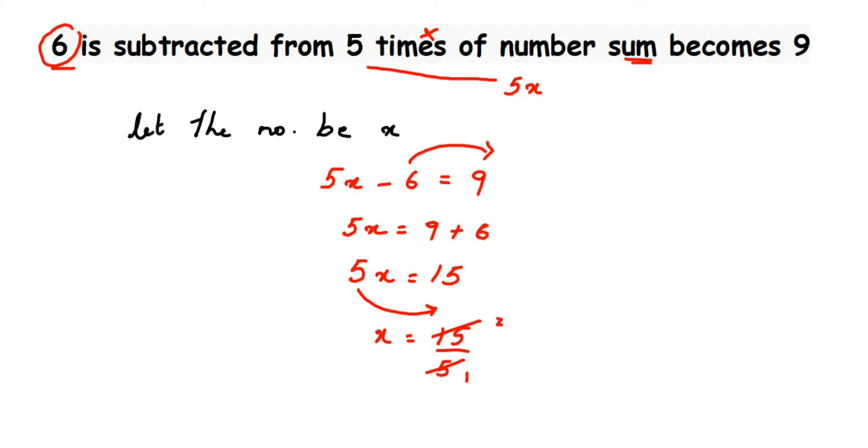Cancel the numbers. In the five times table, five threes are fifteen, so x = 3. We assumed that x is the number, so the required number is three.